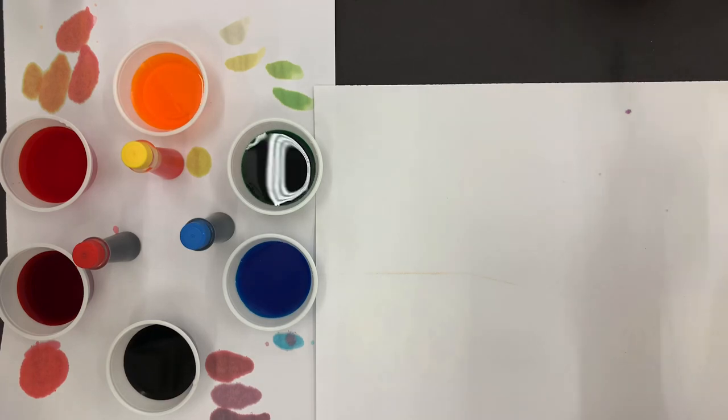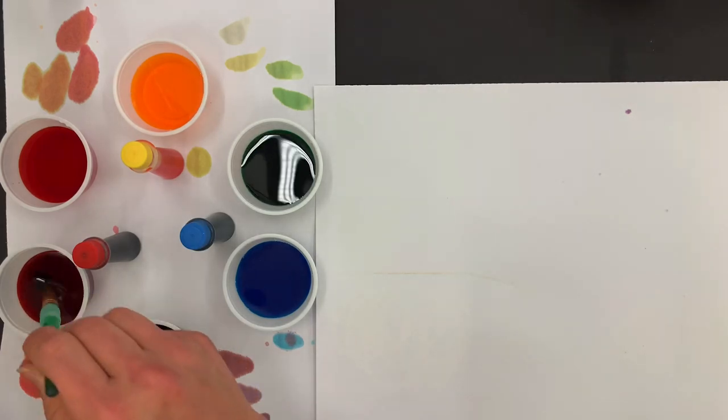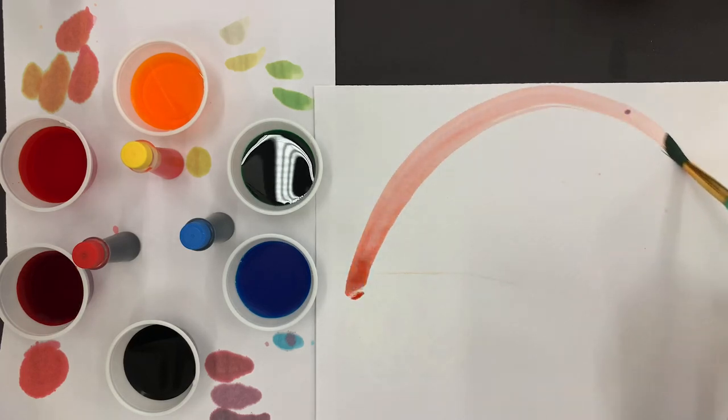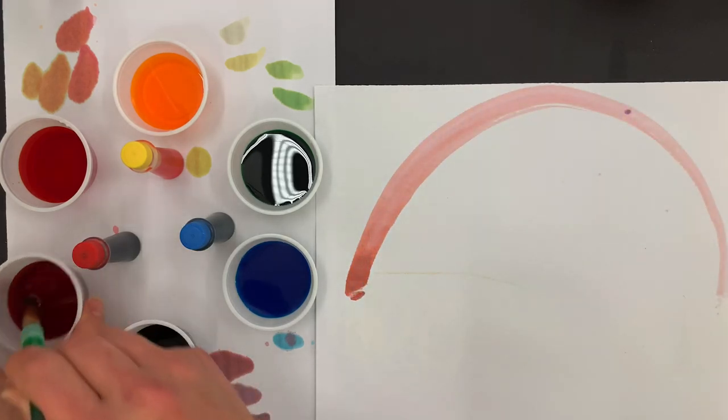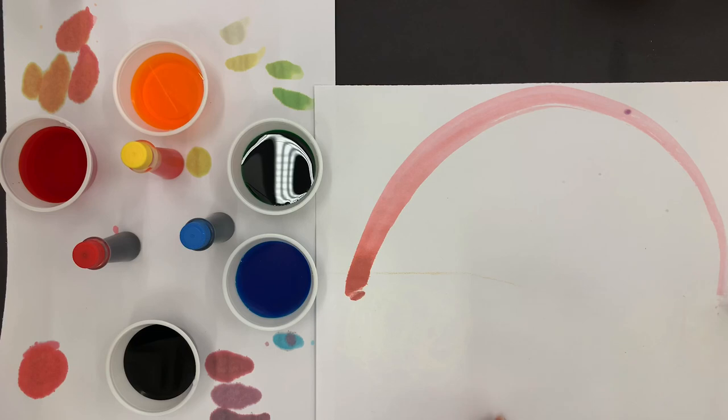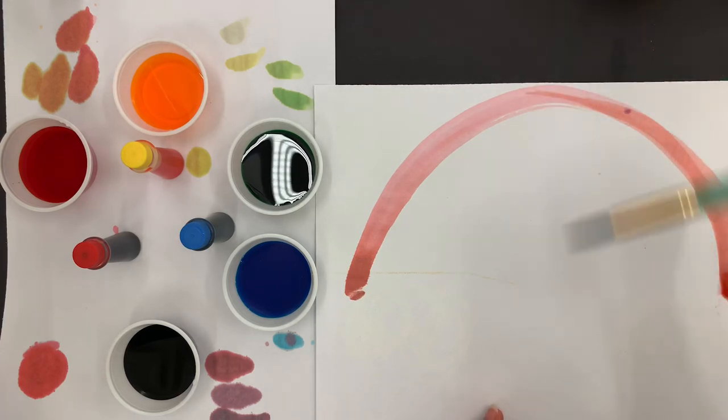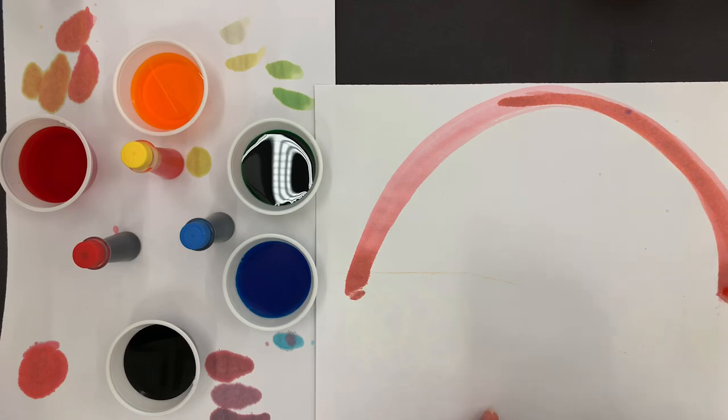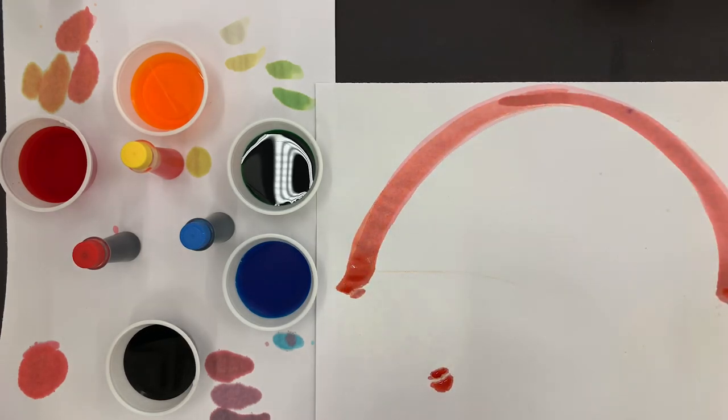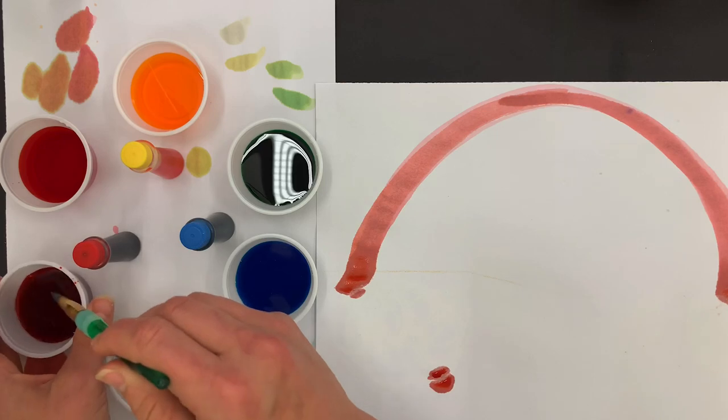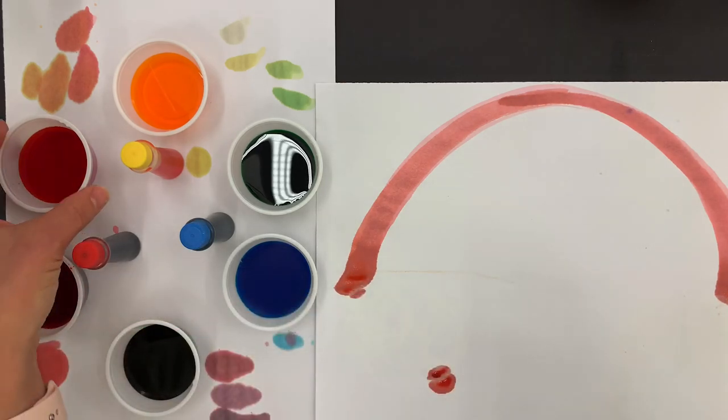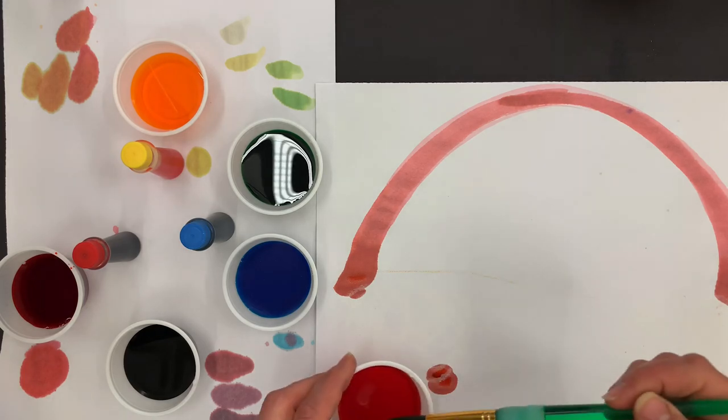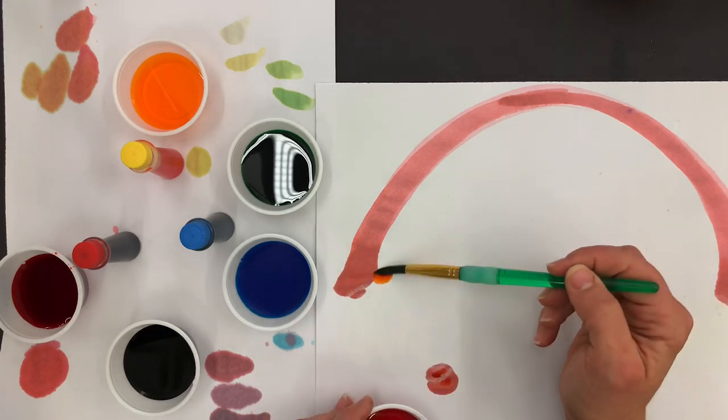And what color comes first in the rainbow? That's right, red. So I'm going to take my red and I'm going to make a very tall rainbow. And oh, look how beautiful that is. And I can add layers to make it more intense. Don't worry if I drop a little bit and mess up, it's okay. I'm going to keep going and make something beautiful out of it.